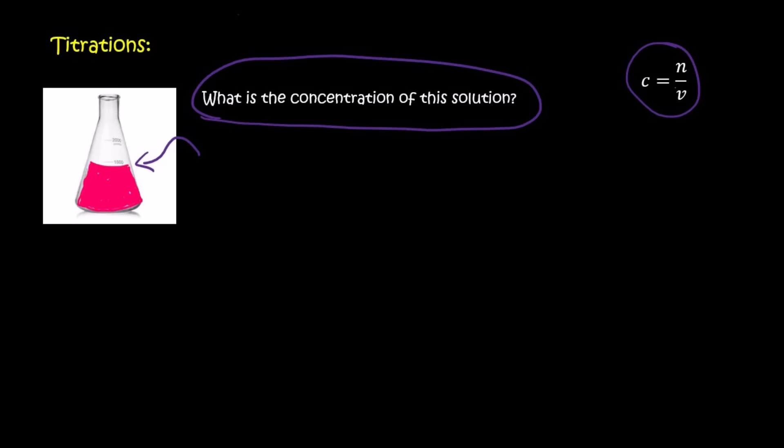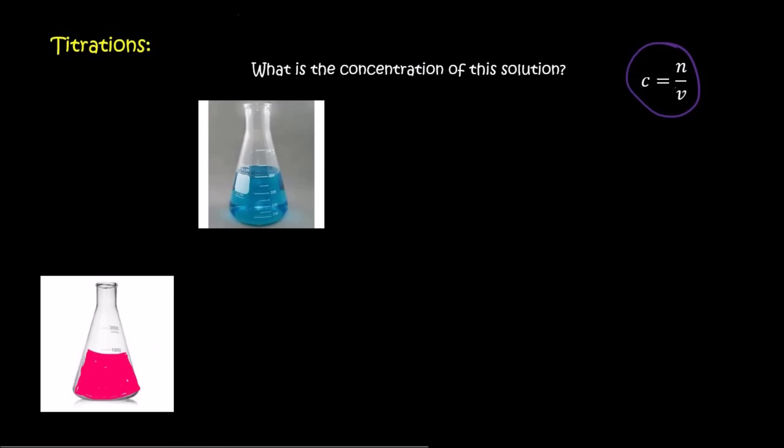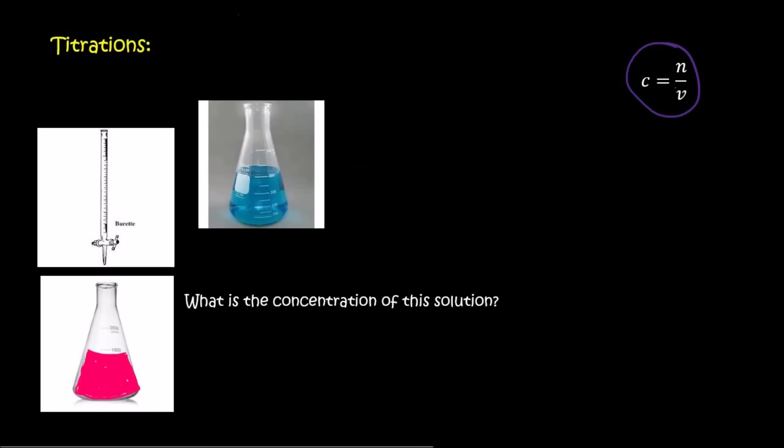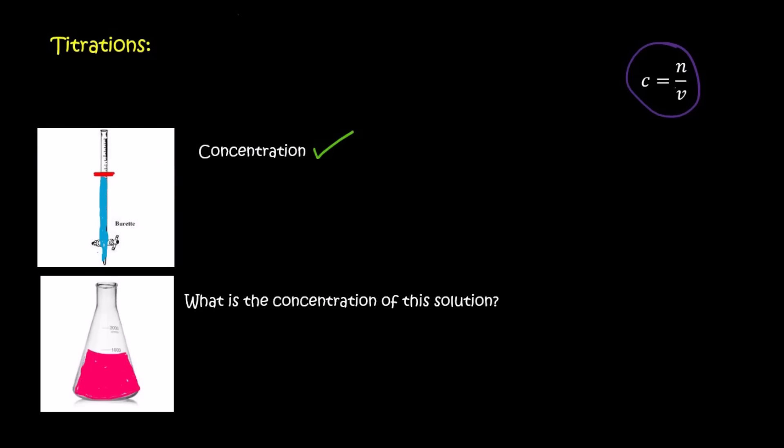Alright, so what we do is we take this liquid that we're trying to determine its concentration and place it over here. We then take another solution whose concentration we do know. We're going to pour the solution whose concentration we know into this device over here called a burette. So remember we know the concentration of that liquid.